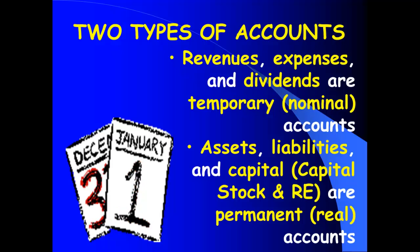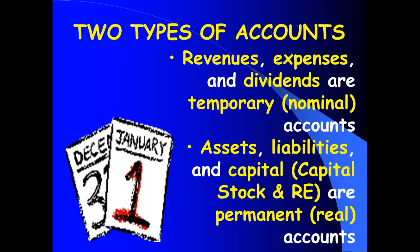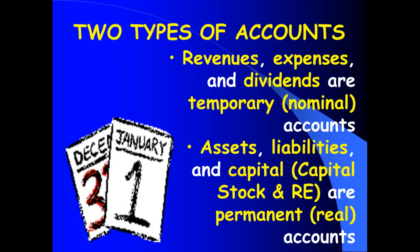There are some accounts we don't close out. What if I had a million dollars cash at the end of 2013? I'd want to start 2014 saying I have a million dollars cash — just because the year ends doesn't mean my money went away. And if I had a million dollars accounts payable at the end of 2013, unfortunately my debt doesn't go away just because the year has ended. So certain accounts — real or permanent accounts — will carry their balance forward. Those are my assets, my liabilities, and my stockholders' equity capital accounts.